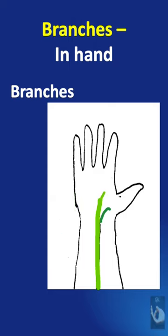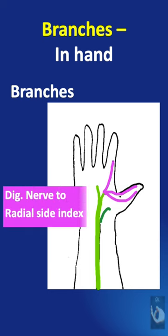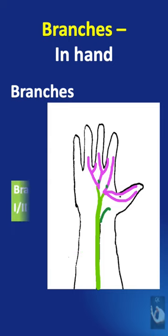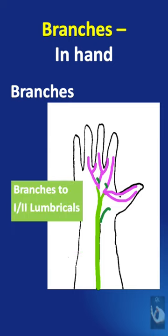It then divides into the radial and ulnar divisions. The radial division supplies the thumb and radial side of index, and the ulnar division supplies the adjoining sides of the index mid and mid ring fingers, and motor branches to the first and second lumbricals.